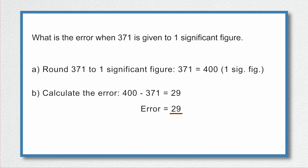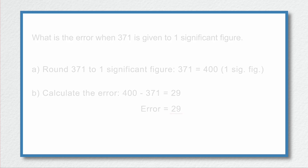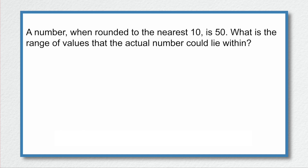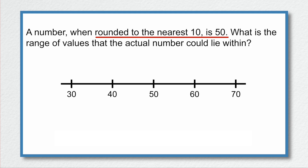Let's take things further and look at how to find a range of values that an actual value could possibly lie in. For example, a number when rounded to the nearest 10 is 50. When looking for a range of values, we are trying to find the smallest possible value and the largest possible value. We have 50 to the nearest 10 and have to work out the range. I'm going to create a number line going up in units of 10 — so we have 30, 40, 50, 60, and so on.